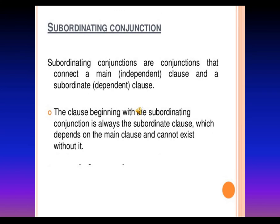Now, the second type: subordinating conjunctions. A subordinating conjunction connects a main clause and a subordinate clause. A main clause can also be called an independent clause, and the subordinate clause can also be called a dependent clause. The clause beginning with the subordinating conjunction is always the subordinate clause, which depends on the main clause and cannot exist without it.